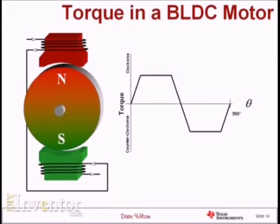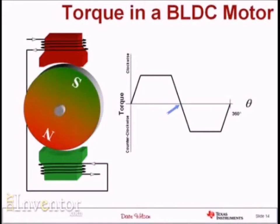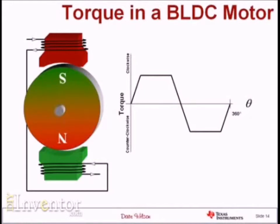Right at angle equals zero, the motor doesn't want to be there because I've got a north pole fighting against a north pole and a south pole fighting against a south pole. All the force produced on the rotor is right through the center, so the net torque is zero. If I knock it off that center position by just a little bit, it swings around to where the motor actually wants to be — where there's attraction between the rotor and stator magnets. If I try to offset the rotor from that position either clockwise or counterclockwise, the motor produces torque fighting to get back to what I call the happy state.